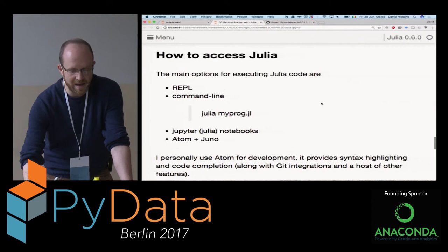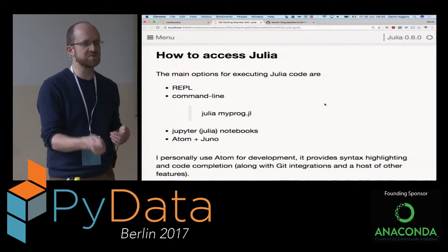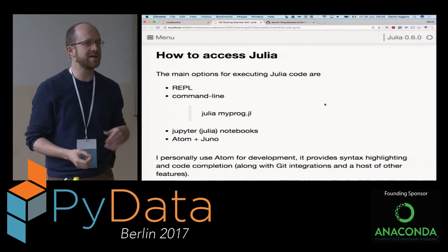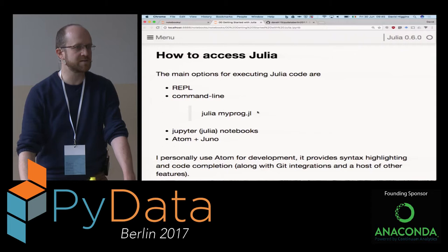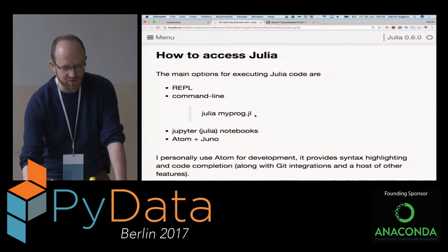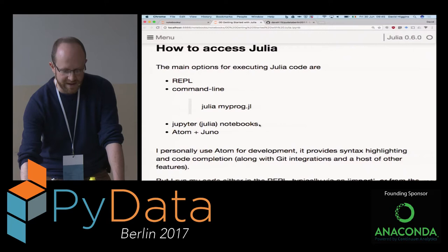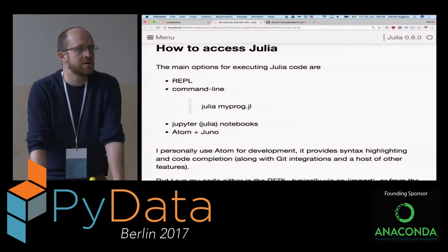How do you actually use Julia? There's a REPL - the read-eval-print loop. That's if you just run Julia and get a command line where you can type in a command and see the output. The command line is where you run Julia and then a filename - like Python my_file.py. You can use Jupyter Notebooks using the iJulia package. The other thing they're working on is the IDE - the text editor Atom - and they're using a package with it called Juno.